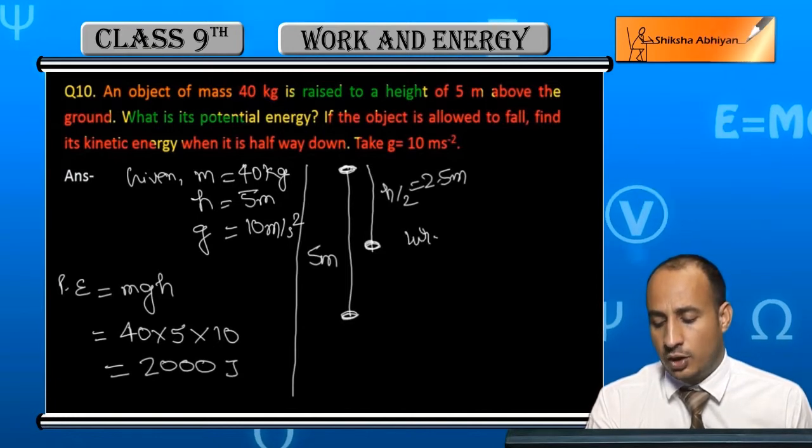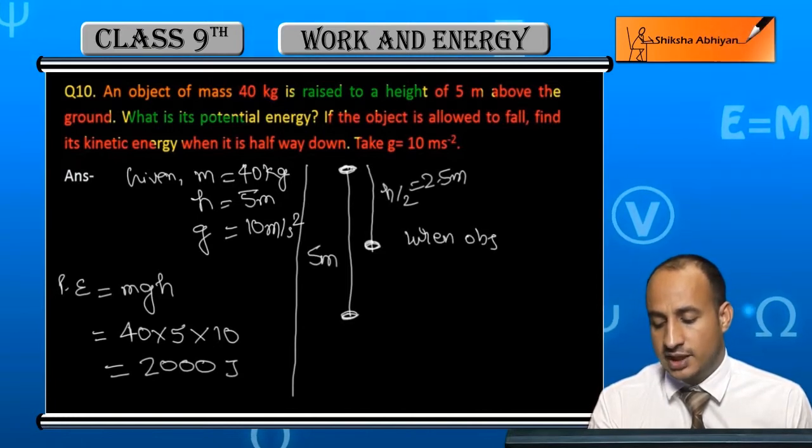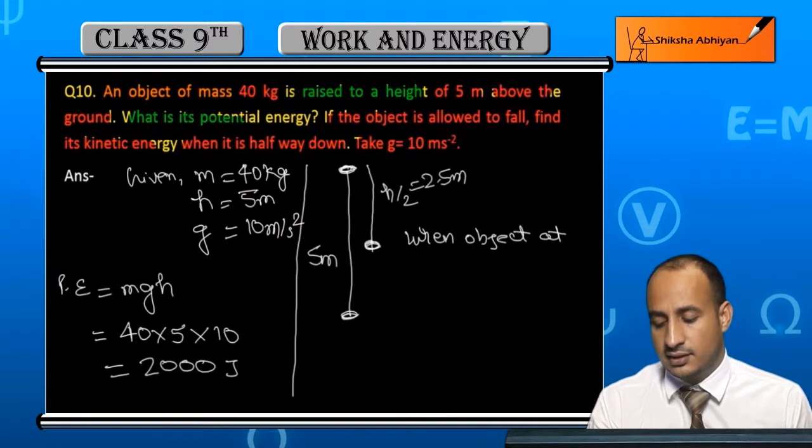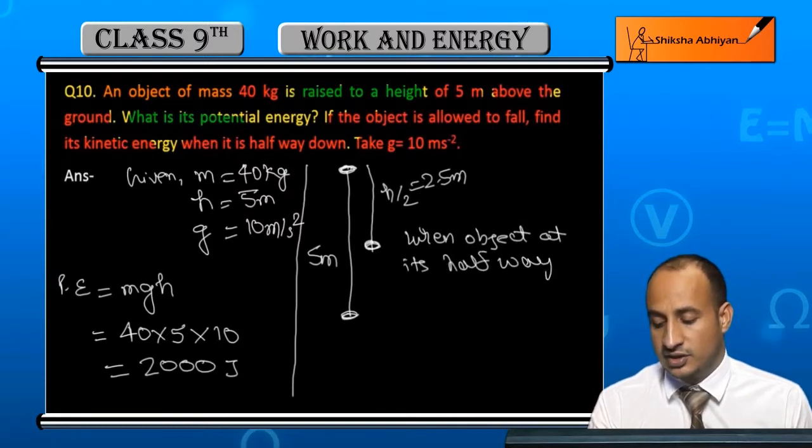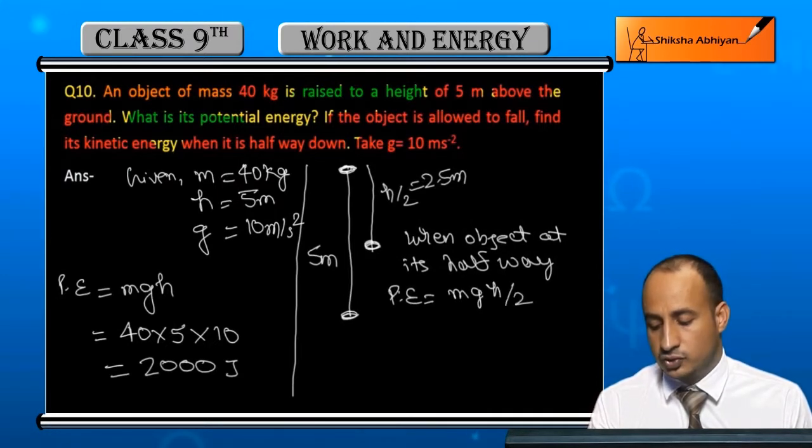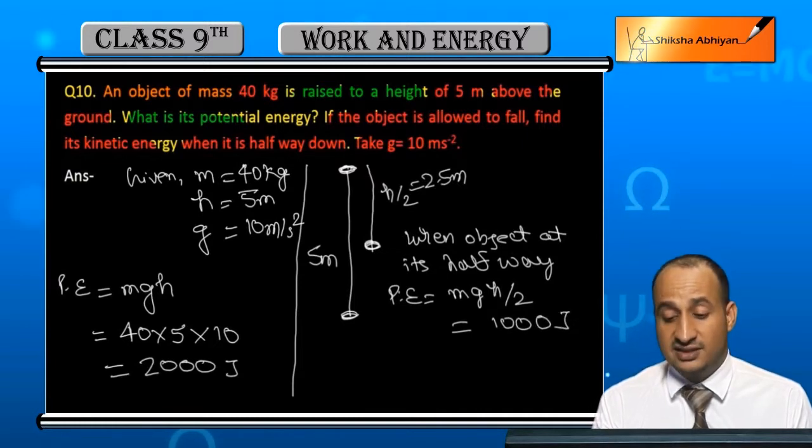So when object is at its half way, the potential energy becomes mgh by 2, which is finally 1000 joule.